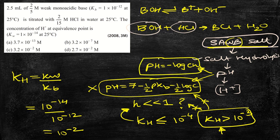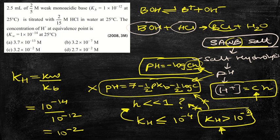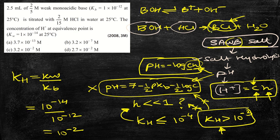Therefore, we must use the formula pH = −log(C·h), and ultimately find [H⁺] = C·h. To do this, we need two things: the concentration C of the salt in solution, and the degree of hydrolysis h. Let's first find the concentration C. For that, we need the moles of BCl and the volume of the solution.